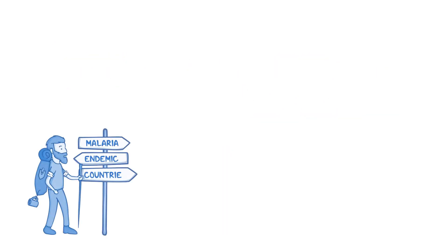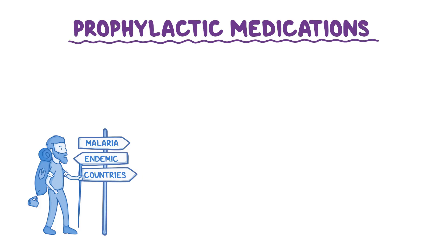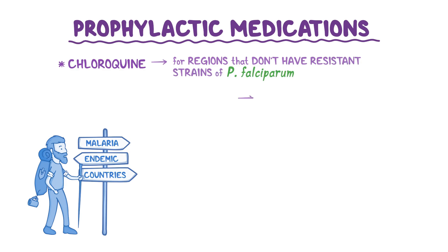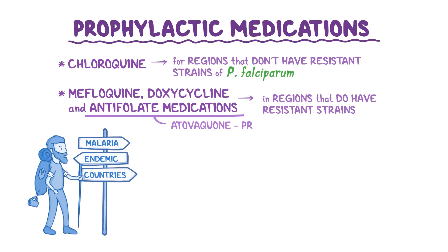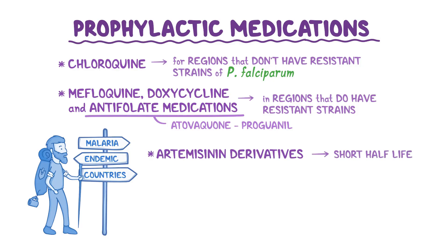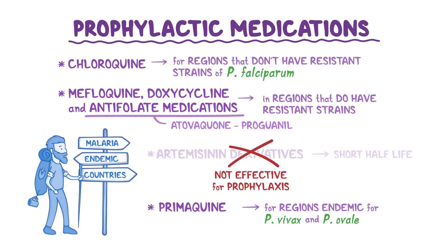Travelers going to countries endemic for malaria need prophylactic medication depending on the region they are traveling to. Chloroquine can be used for regions that don't have resistant strains of plasmodium falciparum. In regions that do, mefloquine, doxycycline, and antifolate medications like atovaquone-proguanil can be used. Artemisinin derivatives have a short half-life of only a few hours, so they are not effective for prophylaxis. For travelers going to regions endemic for plasmodium vivax and plasmodium ovale, primaquine should be given along with one of the other medications to kill hypnozoites in the liver.